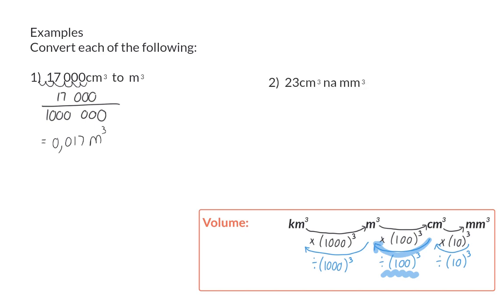Example 2: Convert 23 centimeters cubed to millimeters cubed. Here we multiply by ten three times, which means we multiply by a thousand. That gives us 23,000 cubic millimeters.